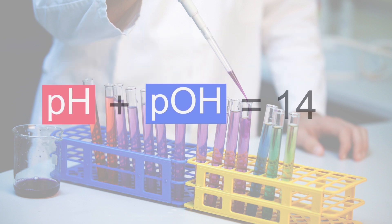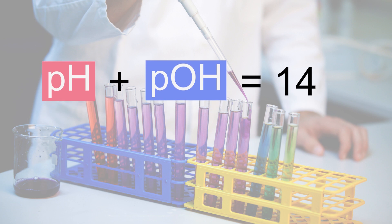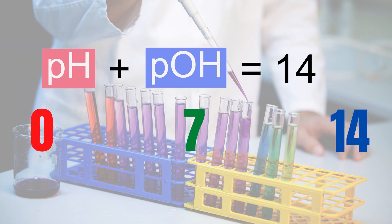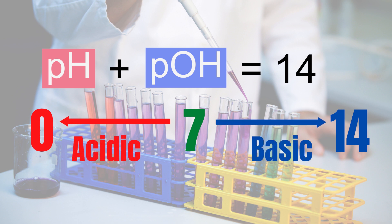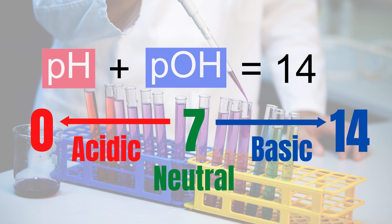pH and pOH are related according to this equation. The pH values range from 0 to 14. Acidic solution has a pH value less than 7, while basic solution has a pH value greater than 7. Solutions having a pH of 7 are said to be neutral solutions.